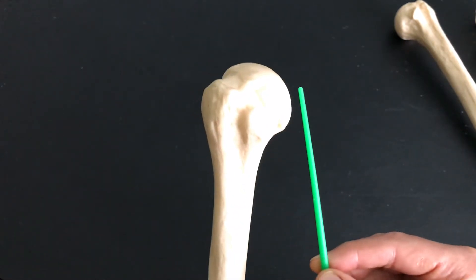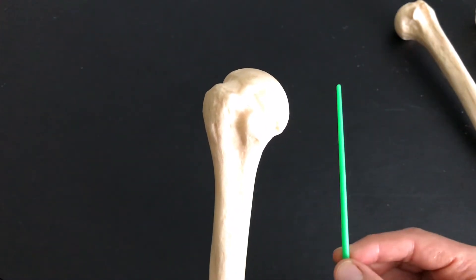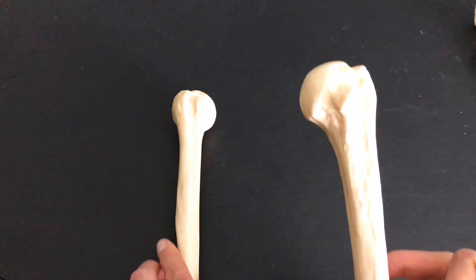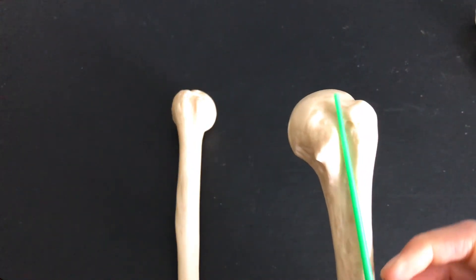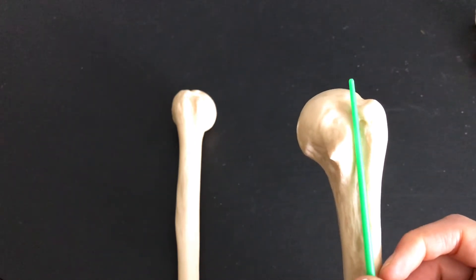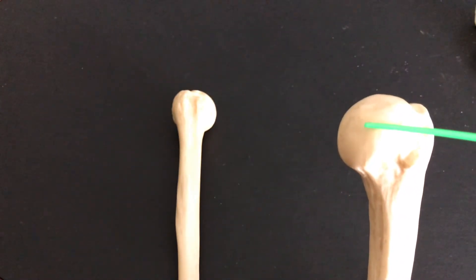From there you can say, okay, my scapula is going to be here. Or if I look at a left humerus, again, here's intertubercular groove. I know I'm looking at the anterior side. That means this is medial.